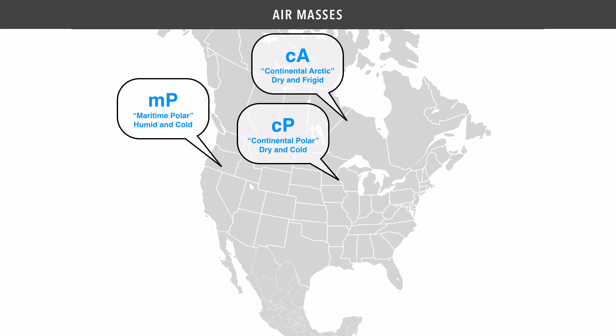We also have wet cold air masses that affect the northwest portion of the United States. These are called MP, or maritime polar, air masses. The word maritime tells you it formed over the ocean, making it a humid air mass, and polar refers to it being cold. We may also see maritime polar air masses moving onshore from the North Atlantic Ocean.